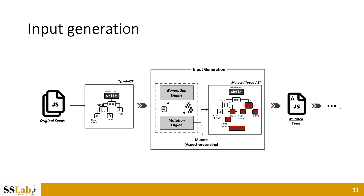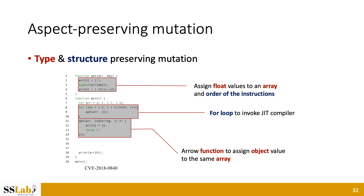The next step is input generation, which takes the typed AST as input and returns a JavaScript file. DAI generates input with both a generation engine and a mutation engine, but our mutation engine has a special feature called aspect-preserving. To maintain the aspects of existing bugs, it preserves type and structure during mutation. For example, in the previous bug example, the types of identifiers such as float, array, function, and object will be maintained during mutation. Additionally, the order of instructions and control-flow-related statements such as for loops will be preserved.